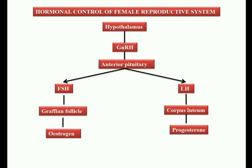To summarize: the hypothalamus, a neurosecretory structure, secretes GnRH, which stimulates the anterior pituitary or adenohypophysis. The anterior pituitary secretes two gonadal hormones — FSH and LH. FSH stimulates the Graafian follicle to secrete estrogen, which supports secondary sexual characteristics. LH stimulates the corpus luteum, which produces progesterone to maintain the endometrial wall. These are the hormones involved in the hormonal control of the female reproductive system.